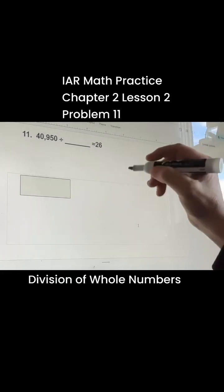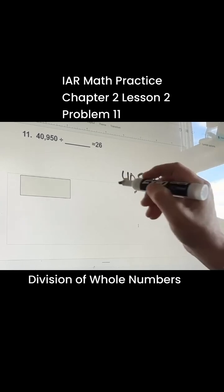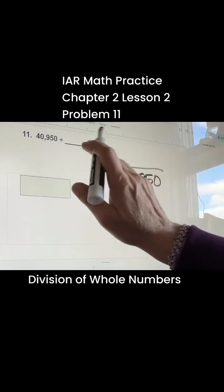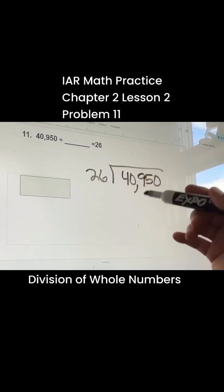We have this problem number 11. You have 40,950, and it's divided by a number we don't know what the number is, and it equals 26. So let's divide it by 26 to get that number.